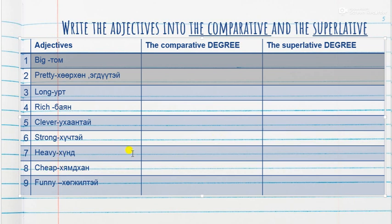Heavy — heavier — the heaviest. Why does it change to 'i'? Because the -y changes to -i before adding -er or -est. Cheap — cheaper — the cheapest. Funny — funnier — the funniest.